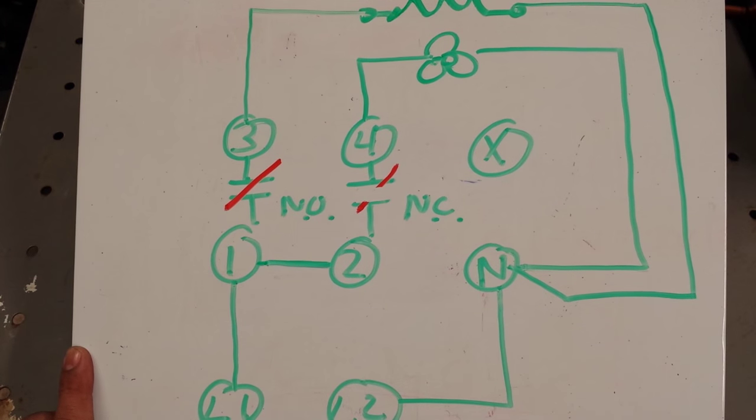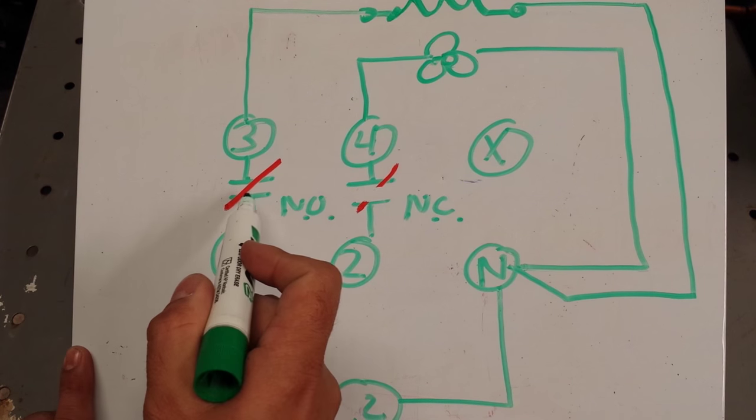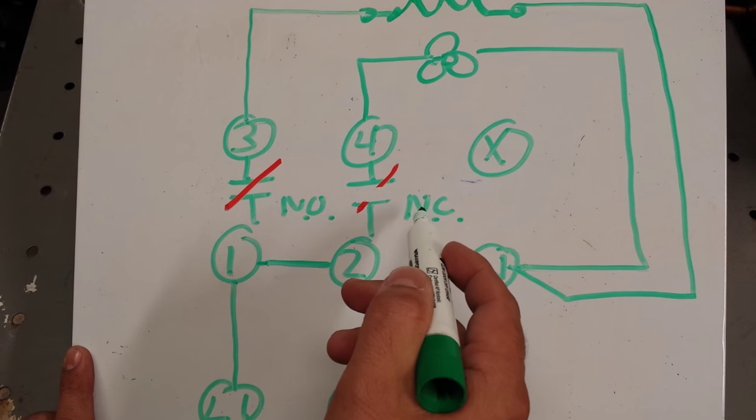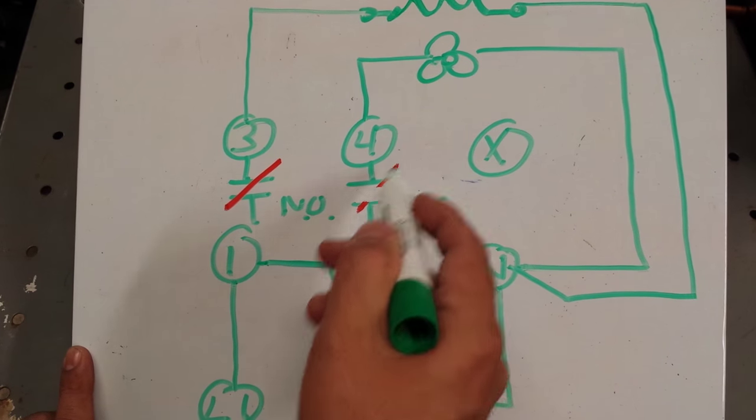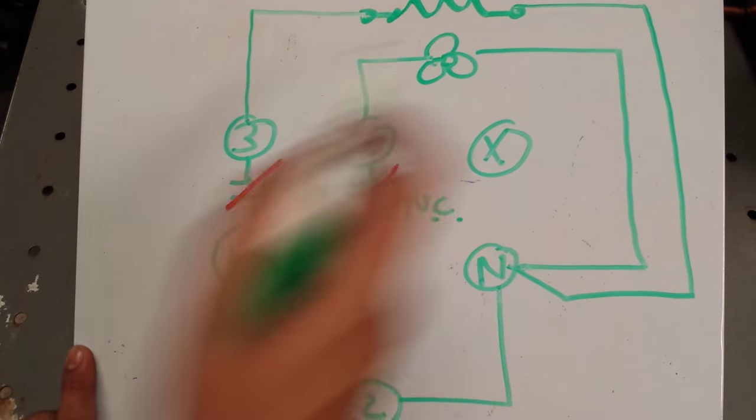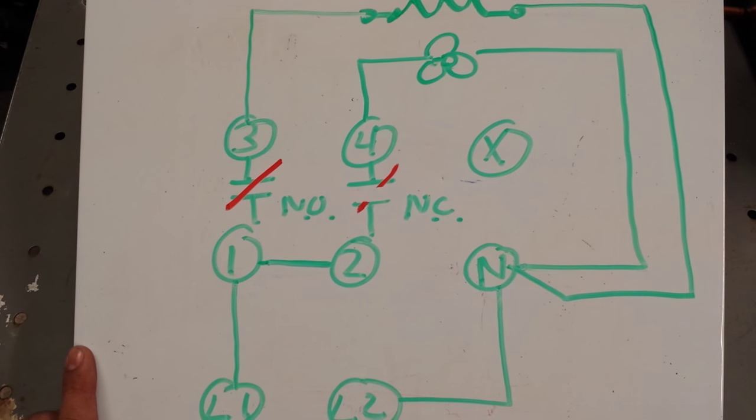When defrost ends, the contacts will revert back to their original positions. This one will reopen back up. And this terminal, this terminal contacts will close. Heaters will turn off and the fans will turn on.